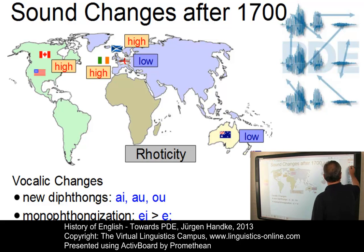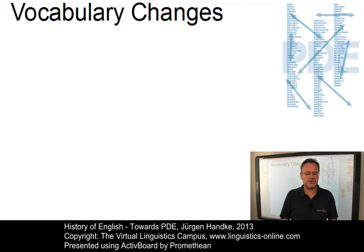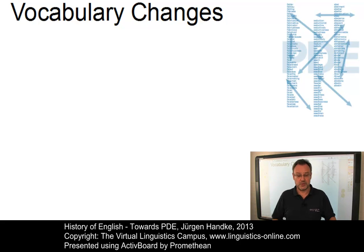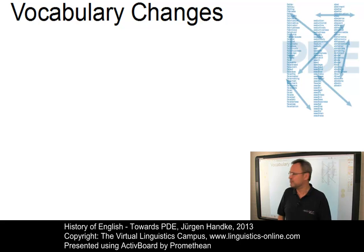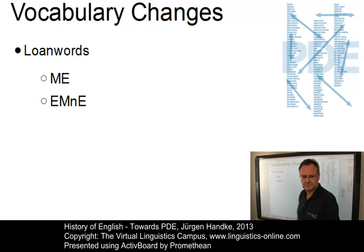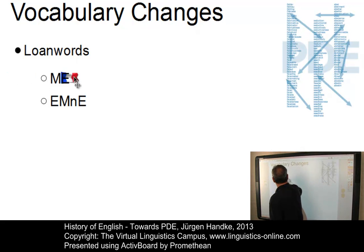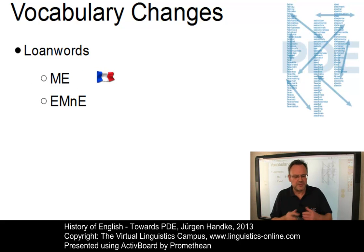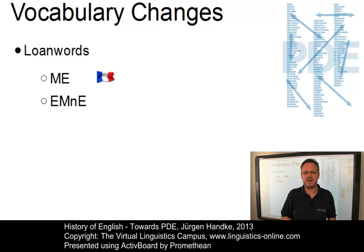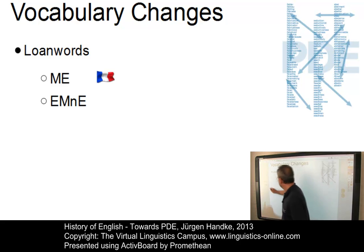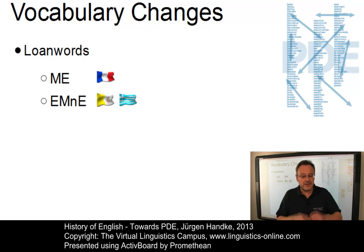Let's now continue with the vocabulary. During the Middle English and Early Modern English periods, great increases in the English lexicon could be observed. The vocabulary of present-day English has continued to expand at an incredible rate. The main process of vocabulary expansion was borrowing. While the bulk of long words in Middle English were borrowings from French that ranged across the entire spectrum of semantic areas, in early modern English borrowings were primarily from Latin and Greek, and they tended to be more learned words of a stylistically formal kind.